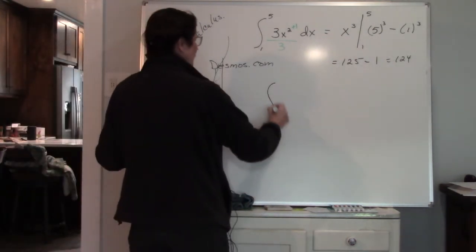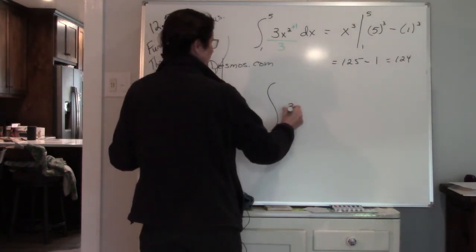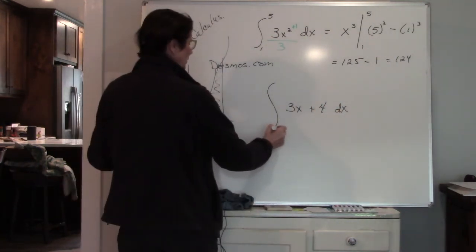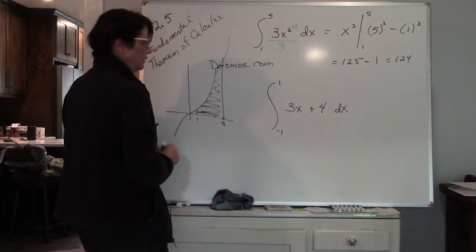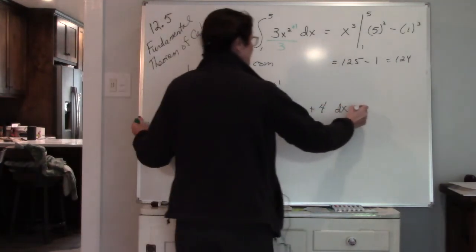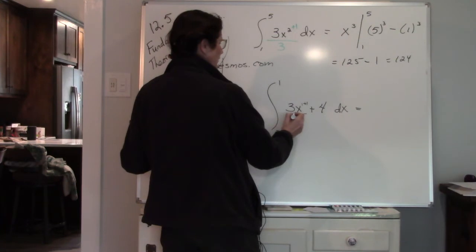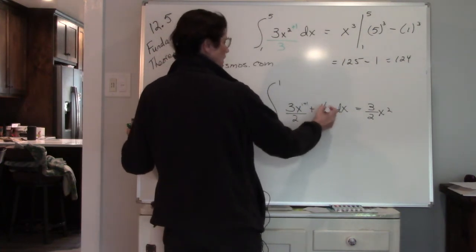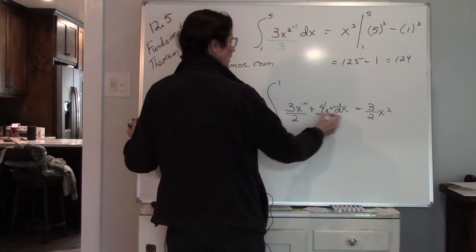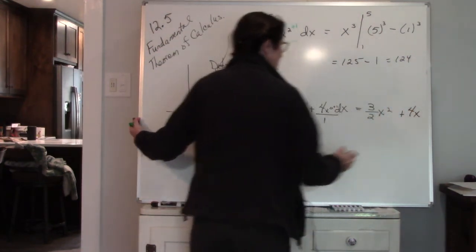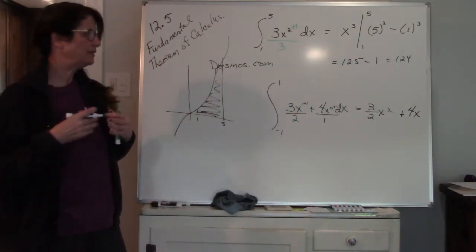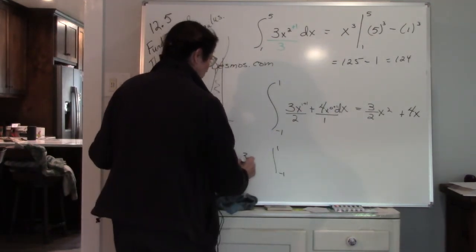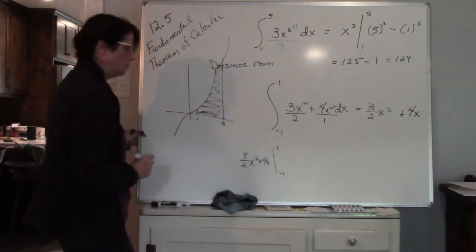Let's try another one. Finding the antiderivative of 3x plus 4 dx, and we're going to evaluate between negative 1 and positive 1. So finding the antiderivative — we have a 1 plus 1 and then dividing by my new exponent. So I have 3 halves x squared. And then remember, when it's a constant, it's x to the 0, so we're adding 1 and then we're going to divide by 1. So it is 4x. So I have my definite integral: 3 halves x squared plus 4x, evaluated between negative 1 and 1.